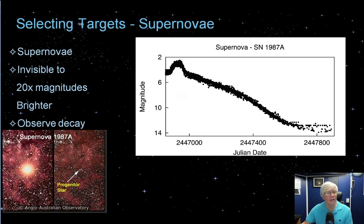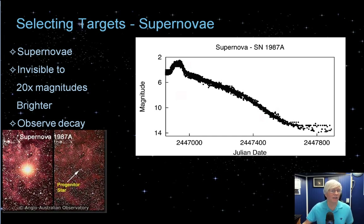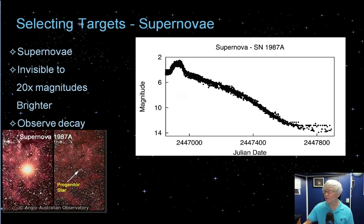Supernovae are stars that basically blow themselves to bits. They're especially fun to observe as you try to monitor the decay in their brightness. It's very rare for a typical amateur astronomer to discover a supernova, but where you can contribute is after the nova is discovered. Supernova 1987A was discovered at almost magnitude 2 and then started to dim after it exploded. As the star matter slowly dissipates into the interstellar medium, the star fades — all the data points along this curve represent amateur astronomer observations monitoring the decay down to about 14th magnitude.